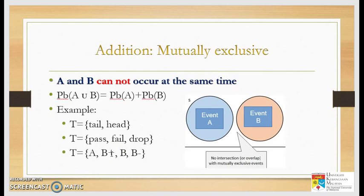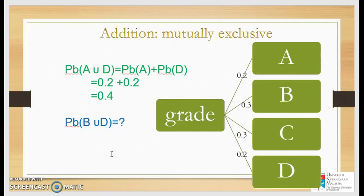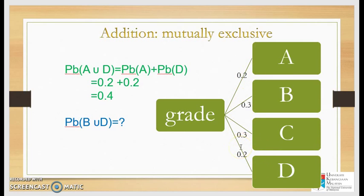Let's calculate using mutually exclusive events. The probability of having grade A or D: just add the probabilities. Probability of A or D equals 0.2 plus 0.2, which equals 0.4. Please calculate the probability of a student having grade B or D on your paper.